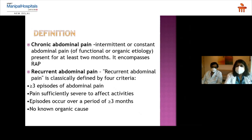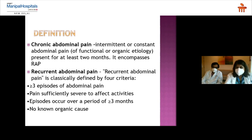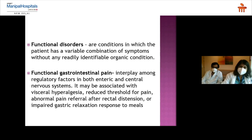Today I will share how to differentiate between functional abdominal disorders and what to look out for if suspecting an organic cause, plus a generalized approach to diagnosis and management. The terminology refers to intermittent or constant pain — functional or organic in etiology — present for at least two months, though most criteria define three months. Recurrent abdominal pain specifically is defined by four criteria: more than three episodes, pain severe enough to affect activities, episodes occurring over at least three months, without any organic cause.